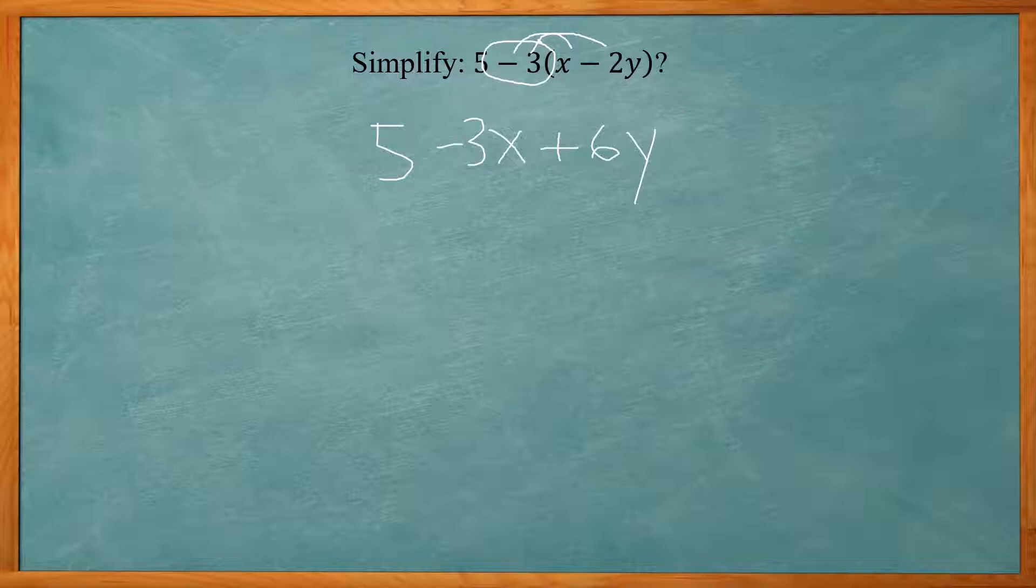And just bring down the five. So at this point, there's no like terms. We had an X term negative 3X and we have a Y term 6Y. Those are not the same variables to the same power and five doesn't have any variables. So once you have no like terms, you're done. So this answer is 5 minus 3X plus 6Y.